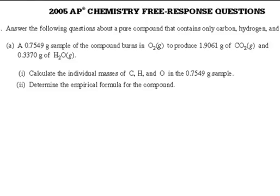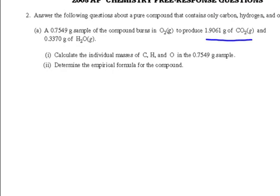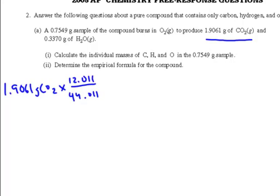In every one of these problems, we know how many grams of carbon dioxide we have — 1.9061 grams of CO₂. From our molar proportion method, we can find just the carbon in there. If I multiply by the ratio 12.011 grams per mole (that's the grams per mole of carbon, part divided by whole), that gives me .5202 grams of carbon.